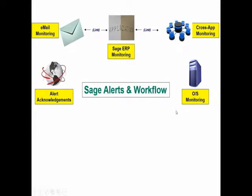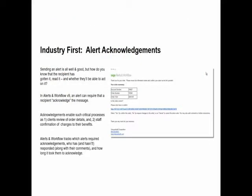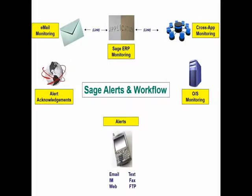Alerts and Workflow can also monitor your operating system — not to compete with tools like Norton, but since you're monitoring everything else in your business, you might want to monitor OS conditions as well. There's also a new module called Alert Acknowledgements: sending an alert is fine, but determining whether it's been received, read, acknowledged, and whether the recipient will take action is even more valuable. Alerts and Workflow allows you to send an alert and require the recipient to acknowledge receipt and specify the action they'll take.